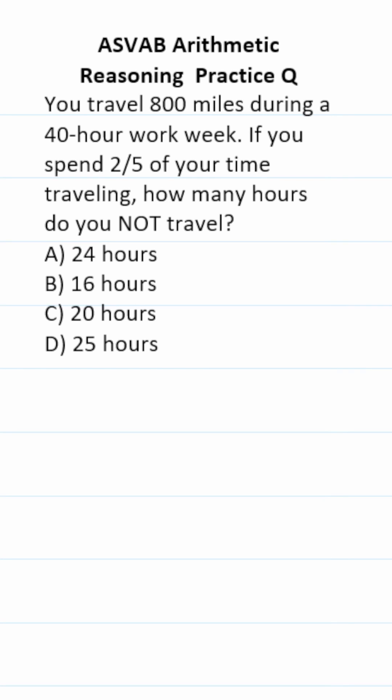This is an Arithmetic Reasoning Practice Test question for the ASVAB. The question says: you travel 800 miles during a 40-hour work week. If you spend two-fifths of your time traveling, how many hours do you not travel?